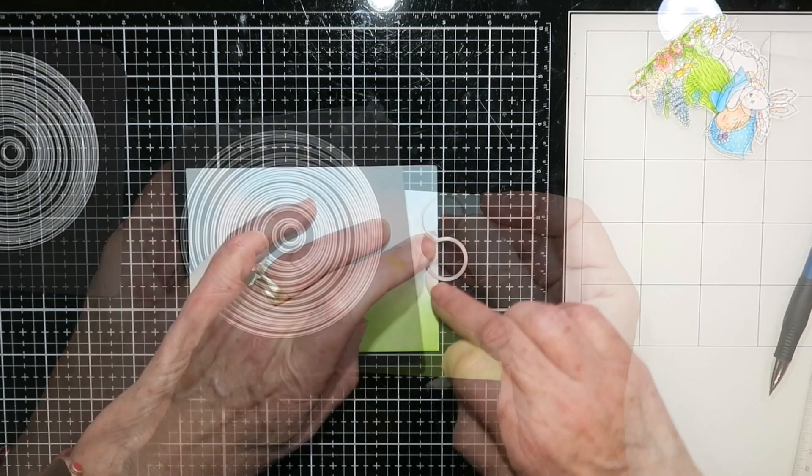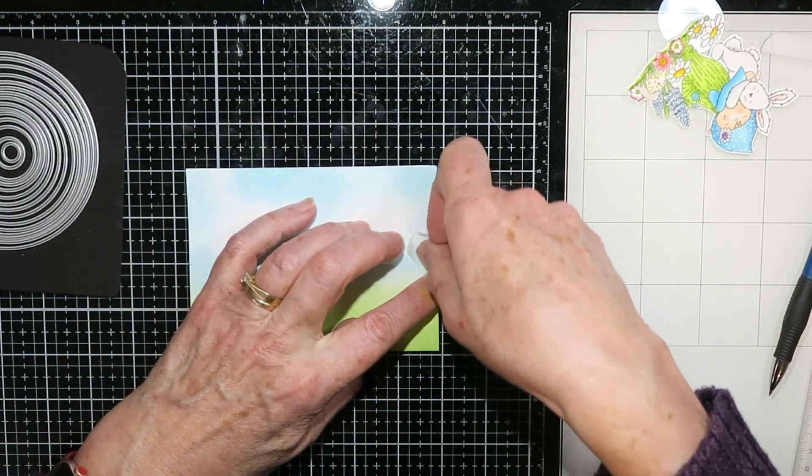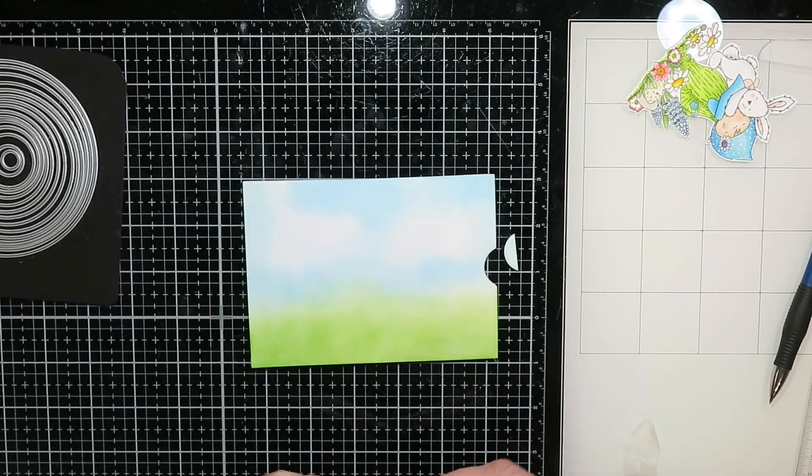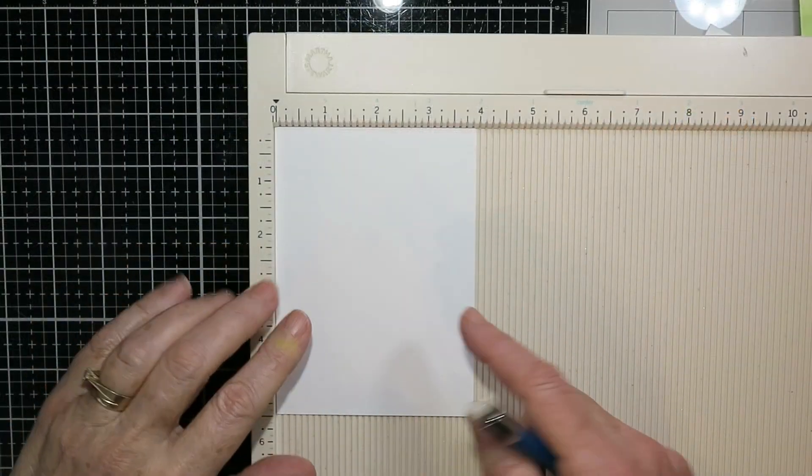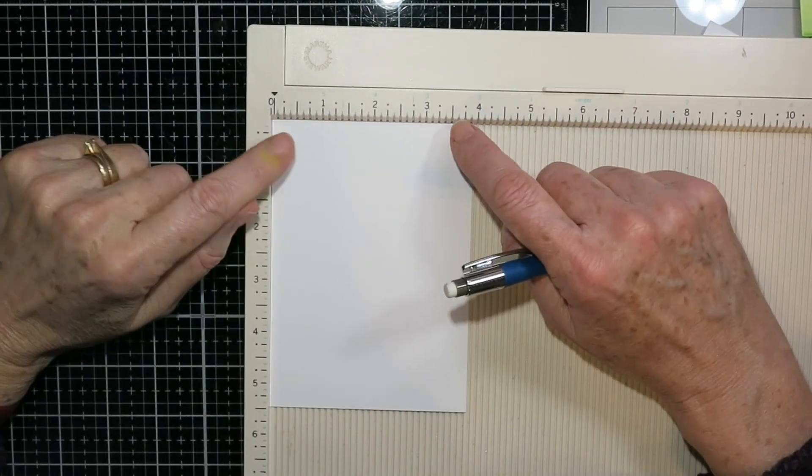Now I wanted some finger holds so I'm just using a small circular die and just putting it in. I've marked where the center is on both sides of this and I just cut small notches out.